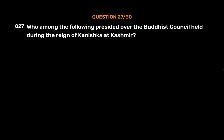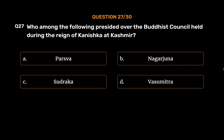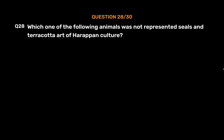Question number twenty-seven: Who among the following presided over the Buddhist council held during the reign of Kanishka at Kashmir? Option A: Parshva, Option B: Nagarjuna, Option C: Sudraka, Option D: Vasumitra. The correct answer is Option D, Vasumitra. Vasumitra and Ashvaghosa together presided over the Fourth Buddhist Council. In this council, Buddhists were divided into Mahayanists and Hinayanists.